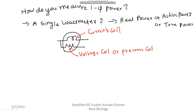The current coil reads current, and the pressure coil reads voltage. Current and voltage are both considered because power comprises of current and voltage components. This is regarding the wattmeter.